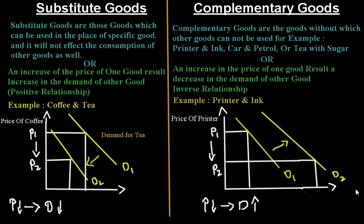Let's assume that if the price of printers decreases from P1 to P2, then the demand for ink increases from D1 to D2. The demand curve shifts to the right as shown in this graph.